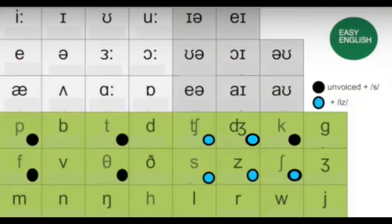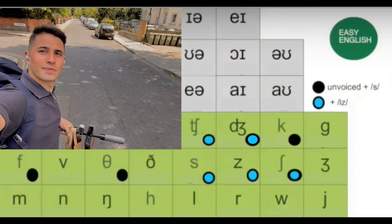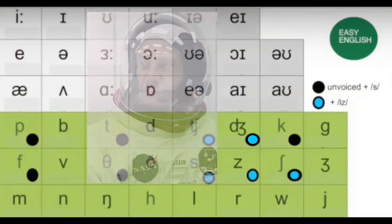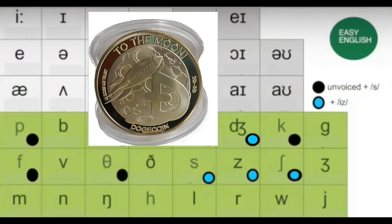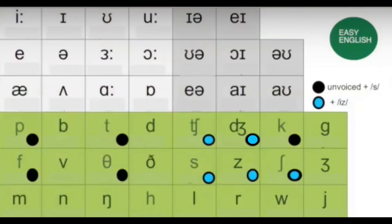Now we're going to look at the third type, which is with the blue dots on the chart. These exceptions — the consonant sounds with the blue dots — in other words, CH, S, Z, and SH — for denoting possession, use the sound 'iz'. For example: Charlotte Church's voice, Carlos's scooter, Buzzy's helmet, Doge's value, Dinesh's luggage.